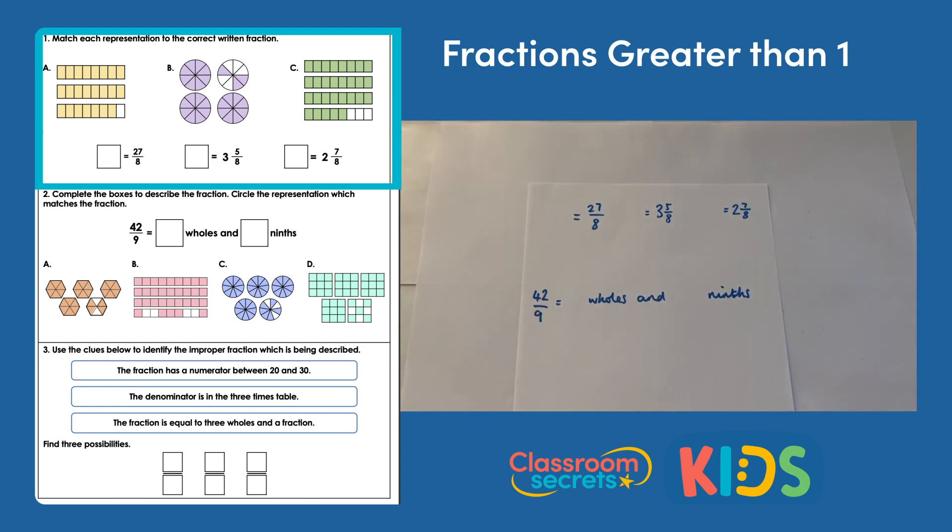So on A, I have two bars which are completely full, so they must represent my two whole numbers. And then on the bottom bar I have seven out of the eight parts shaded, so that must mean I have two and seven eighths. I can see that two and seven eighths is an option, so I'm going to put A there.